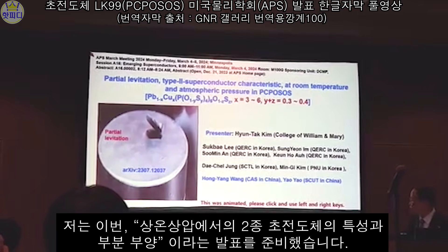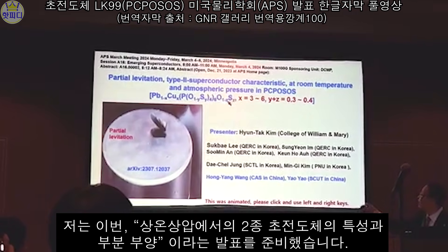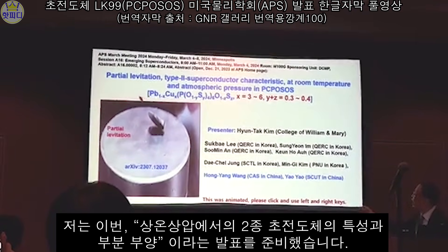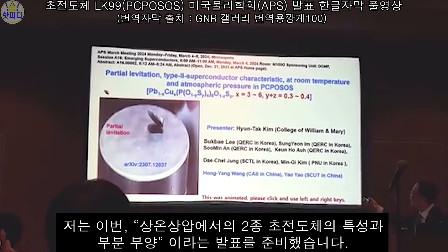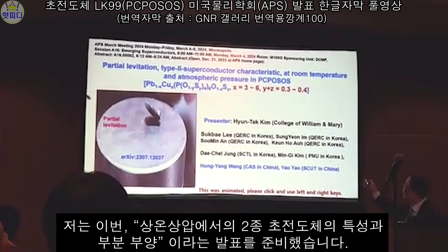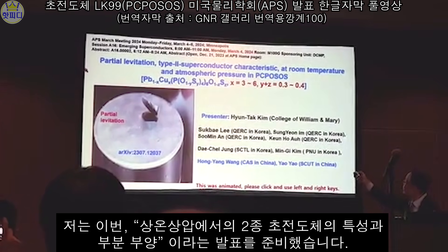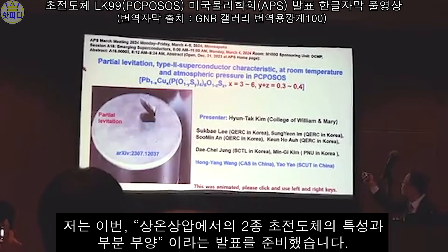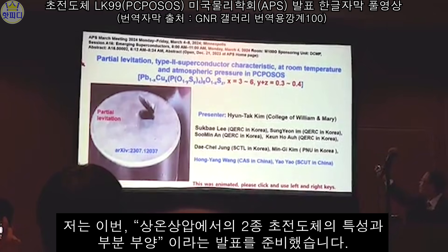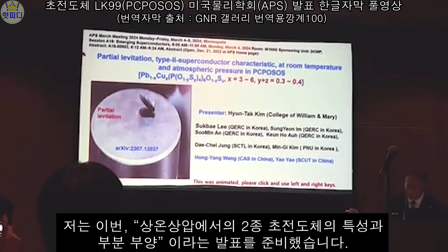I prepared this presentation on partial meditation and high physical construction techniques. So I would like to say a physical source. Then X equals three to six, Y plus G — this is important information.